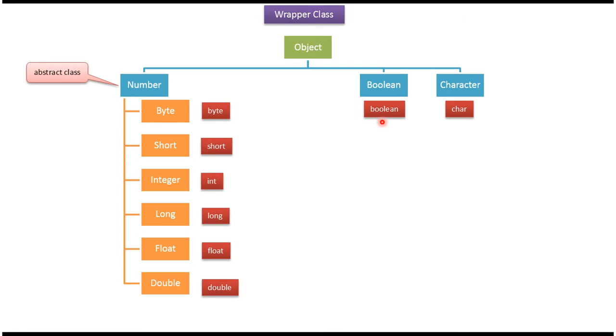For primitive datatype boolean, the corresponding wrapper class is Boolean. For primitive datatype char, the corresponding wrapper class is Character.